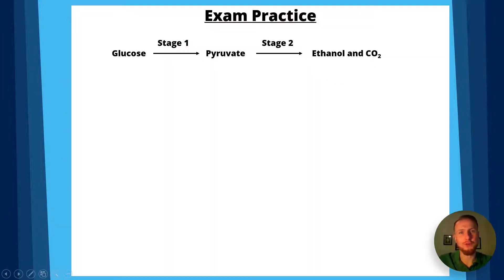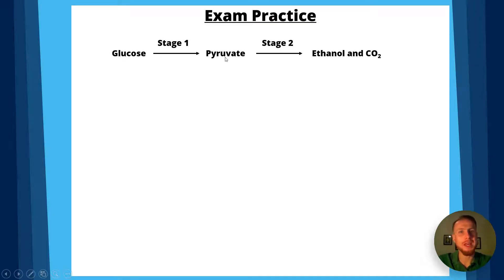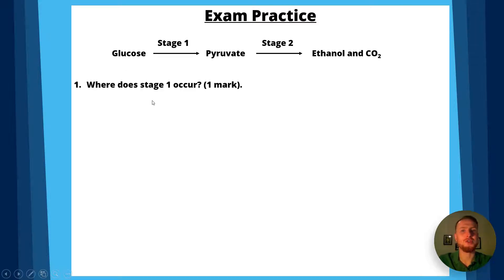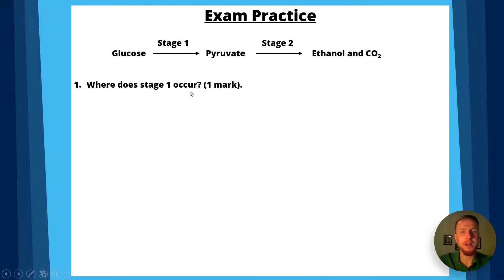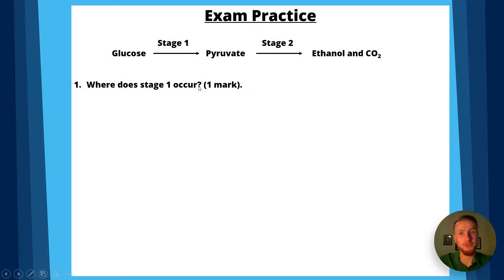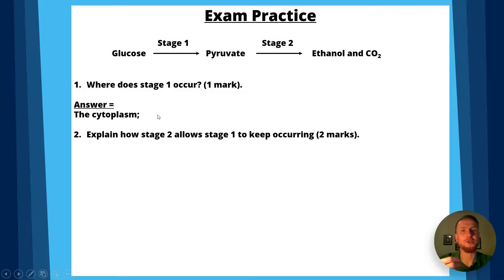Let's go through some exam practice. We have a diagram showing glucose to pyruvate as stage 1, and pyruvate to ethanol and CO2 as stage 2. Question 1: where does stage 1 occur? The answer is the cytoplasm.